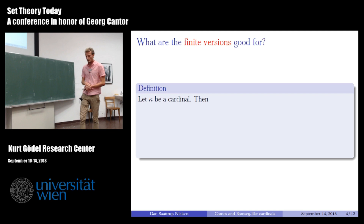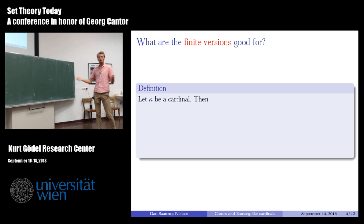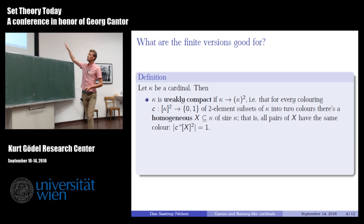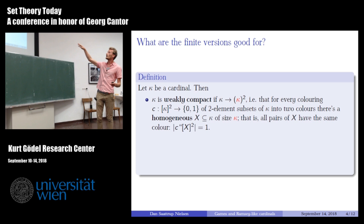Let's start with the finite versions — by finite versions I mean strategic n-Ramsey for n some finite number. First, let's recall some well-known large cardinals. κ is weakly compact if and only if κ → (κ)²₂, which means whenever we have a coloring of pairs from κ into two colors we can find a homogeneous set of size κ — all pairs from that set have the same color.